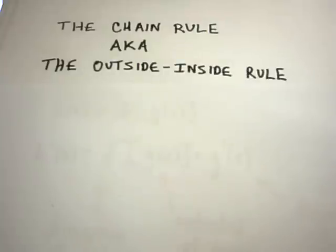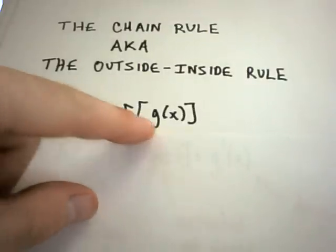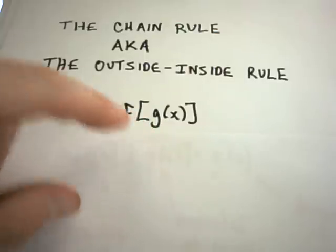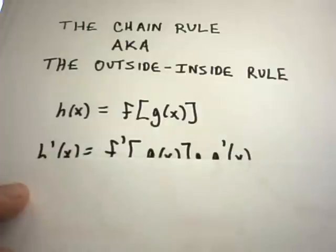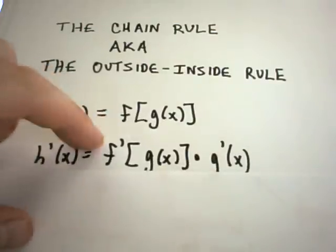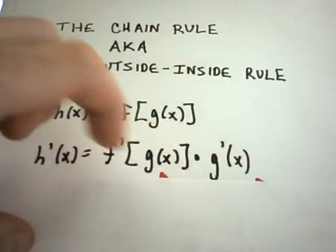So this is what the chain rule basically says. It says you start off with a function that's actually a composition of functions. And it says to take the derivative of that, what you do is, it's the derivative of f, the inside's left alone, multiplied by the derivative of the inside.